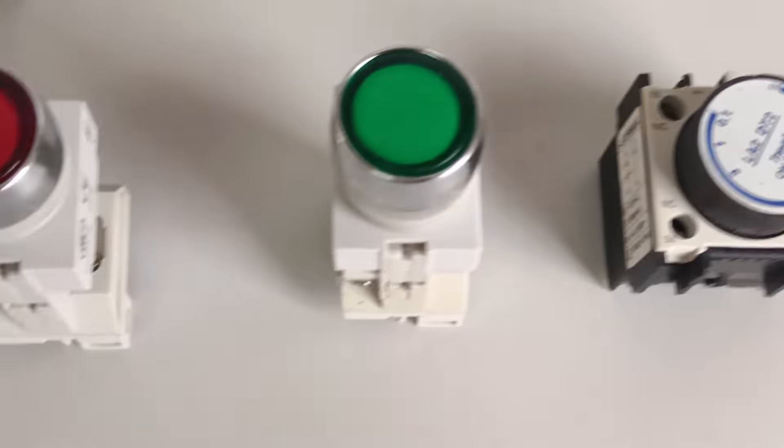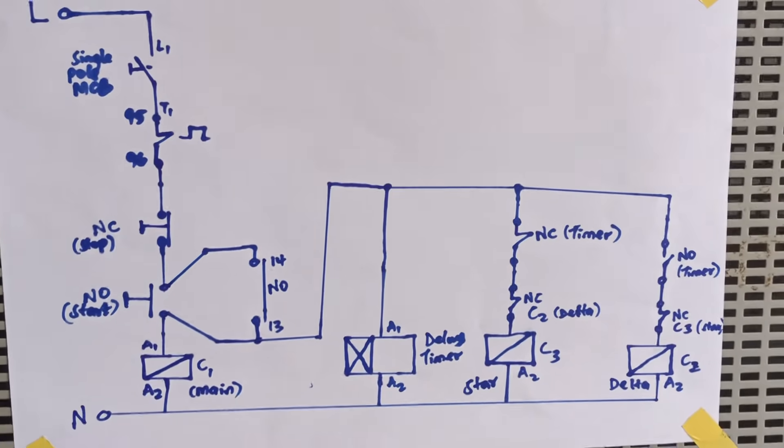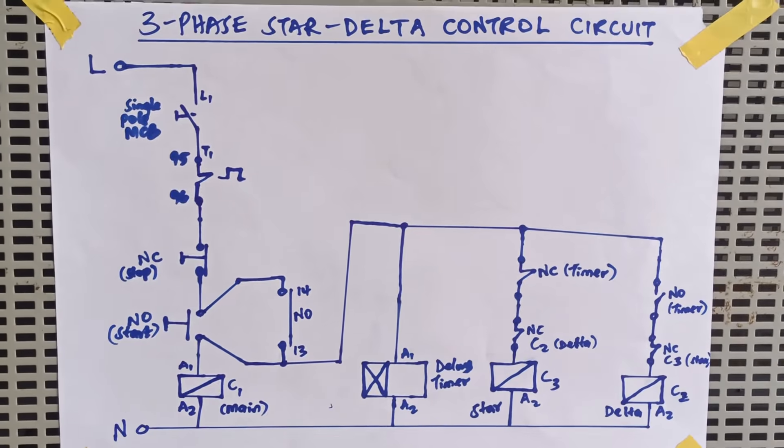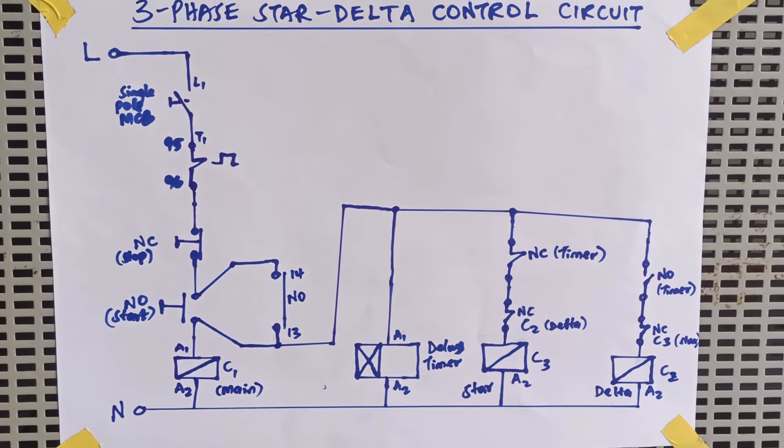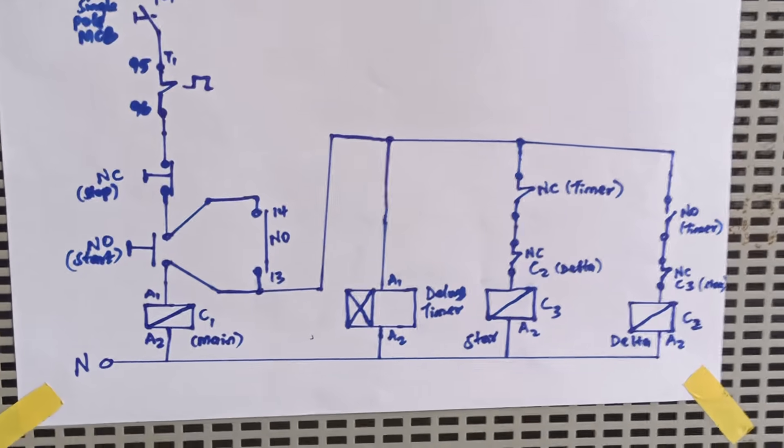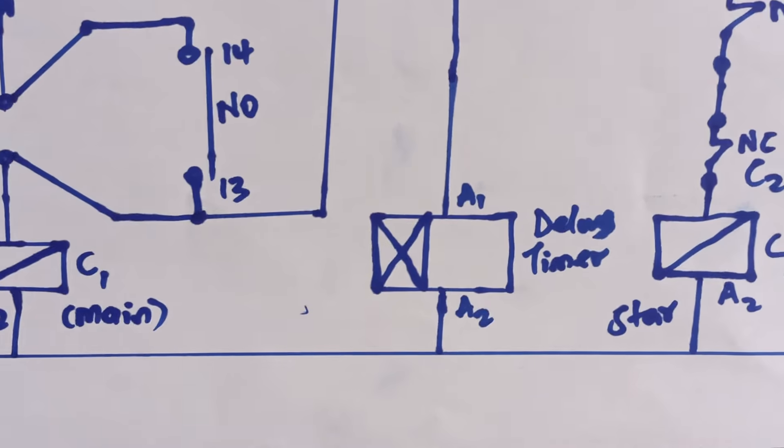In this circuit we need two push buttons, NC and NO, three contactors and thermal overload relay, and also an MCB circuit breaker for protection of the control circuit.